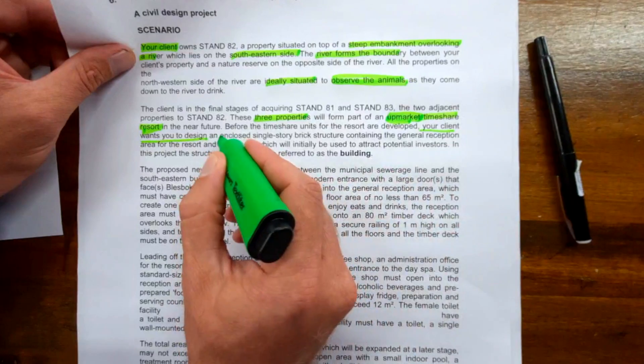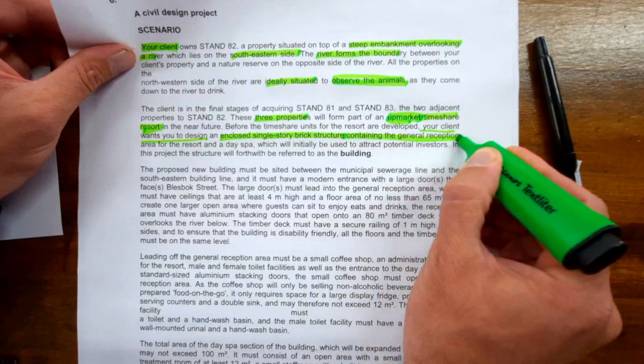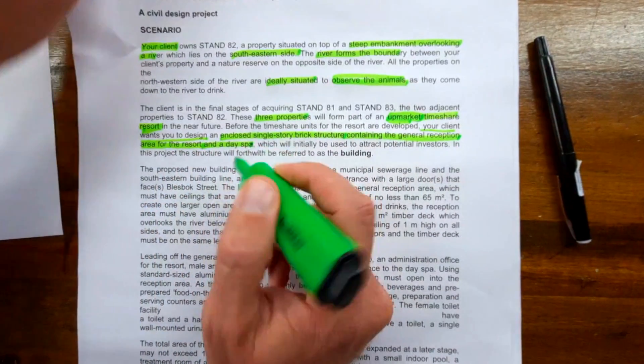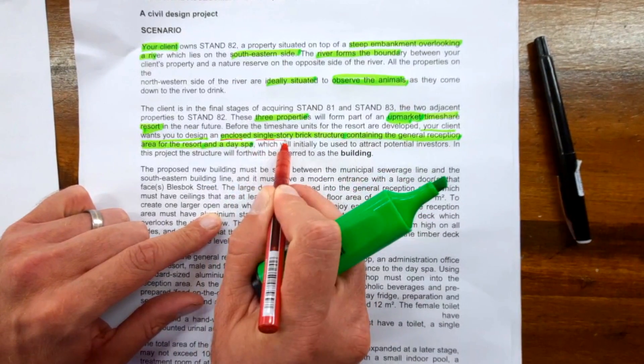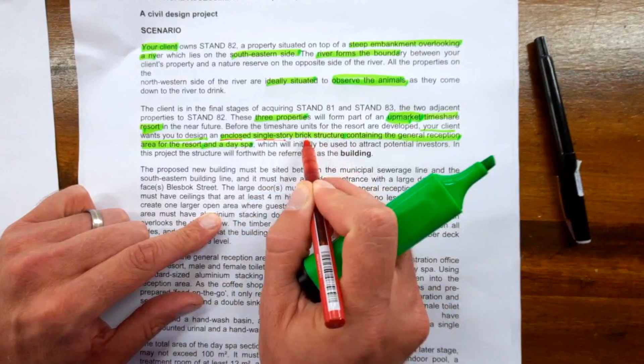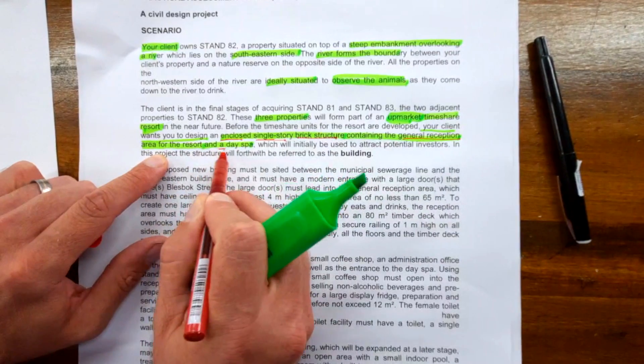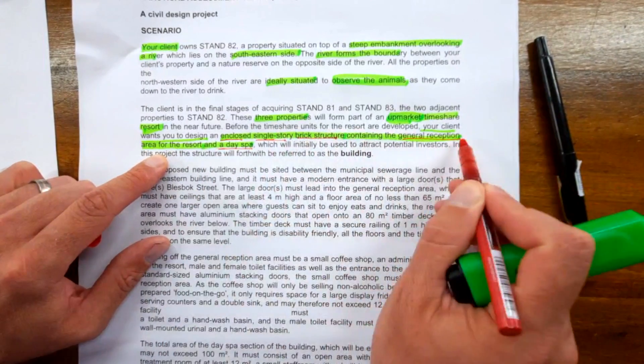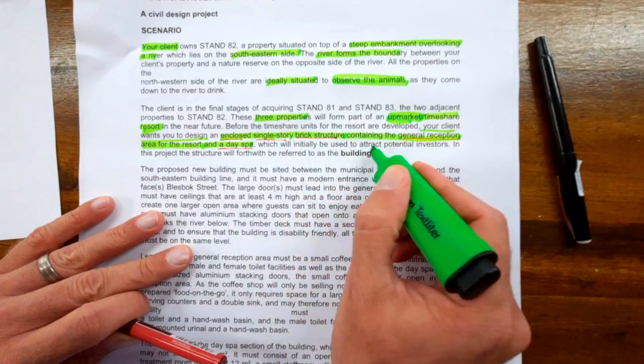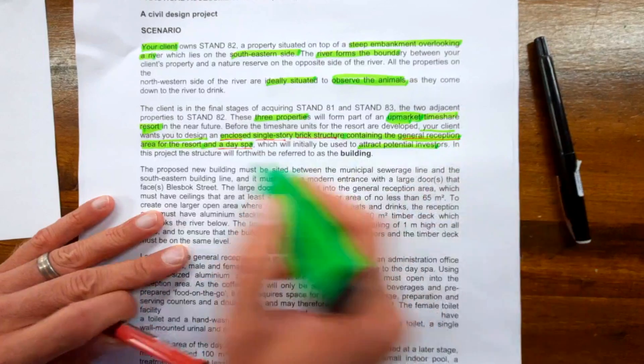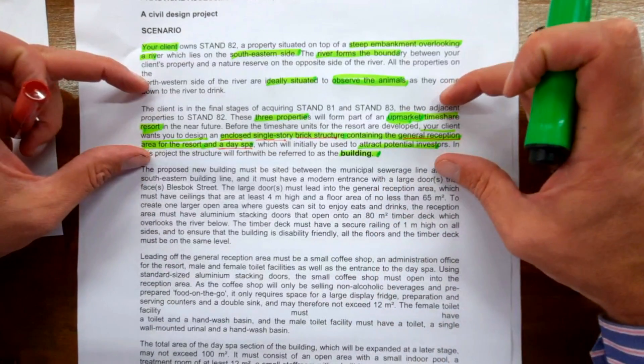Before the timeshare units are developed, your client wants you to design an enclosed single-story brick structure containing the general reception area for the resort and a day spa. Those are the key primary problems you have to solve with your solution. This will initially be used to attract potential investors.